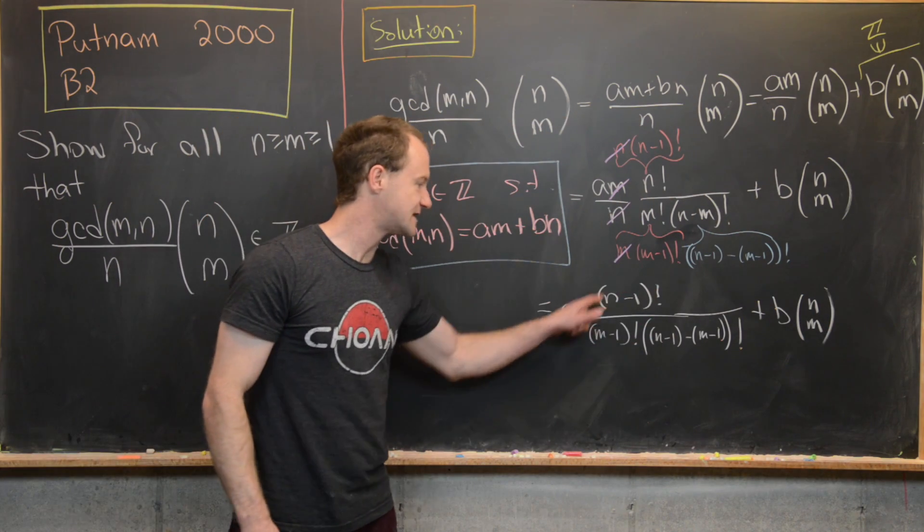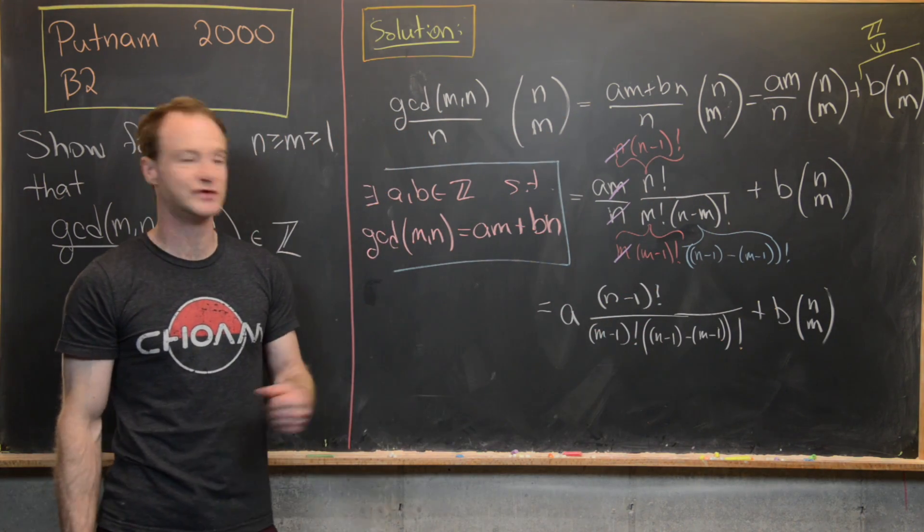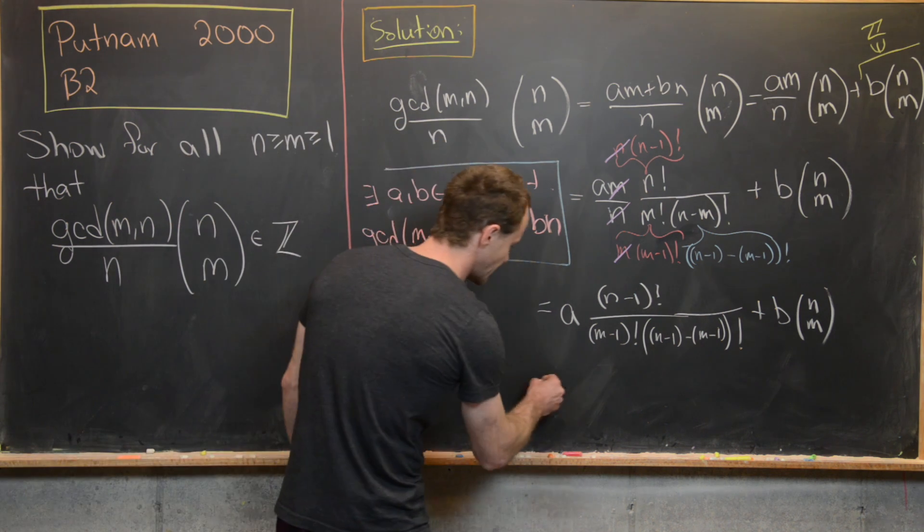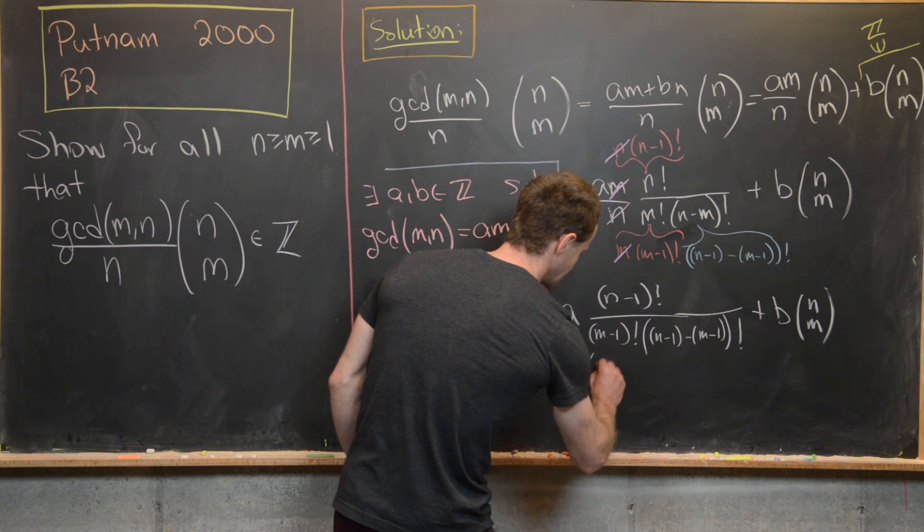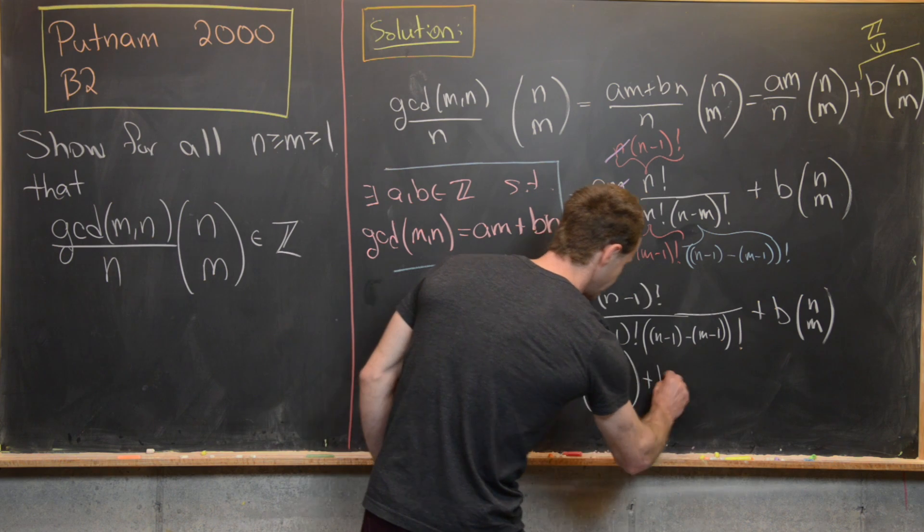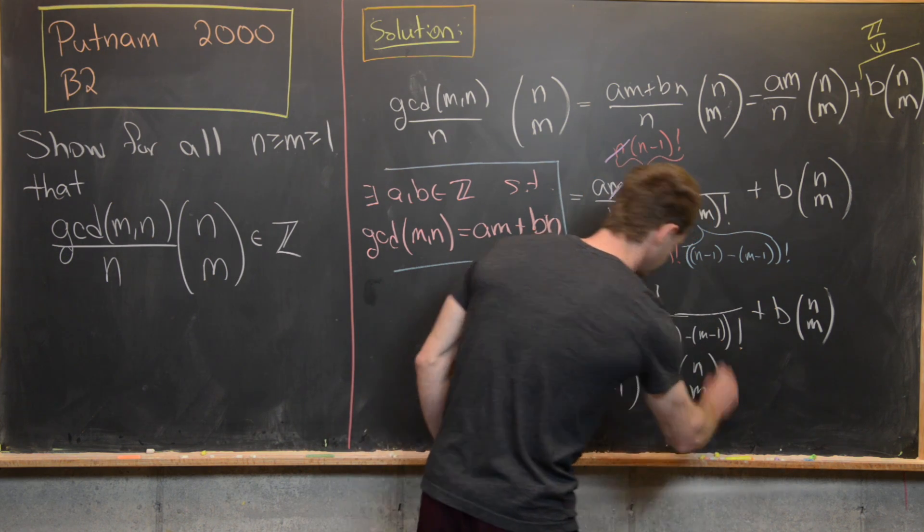But now we notice that this is the binomial coefficient ((n-1) choose (m-1)). So we can write this as a × ((n-1) choose (m-1)) + b × (n choose m).